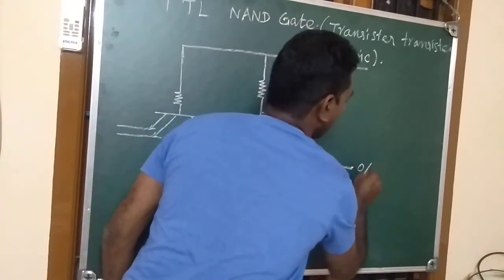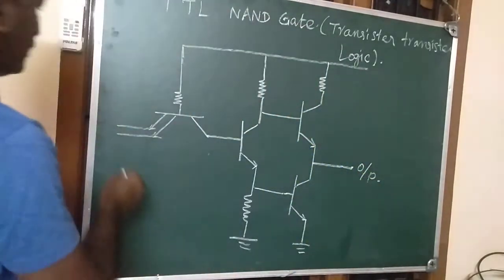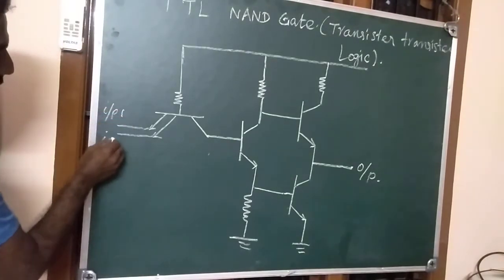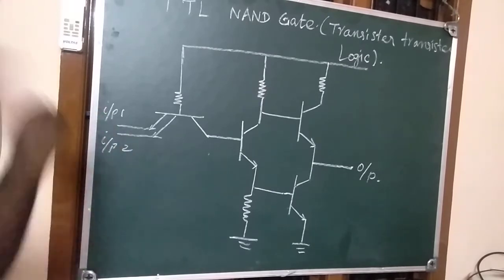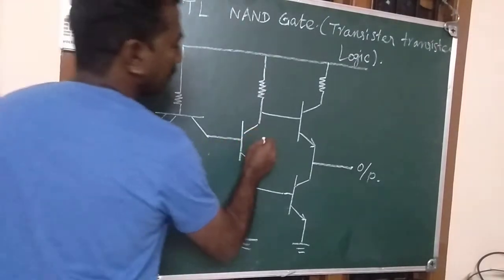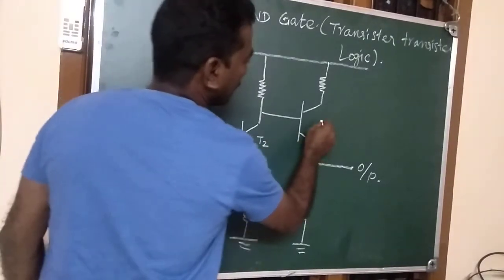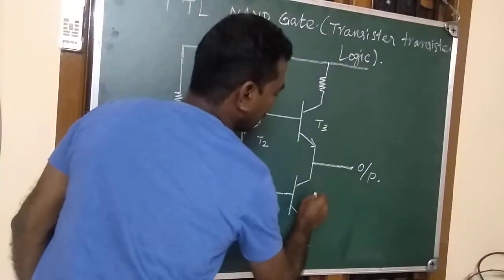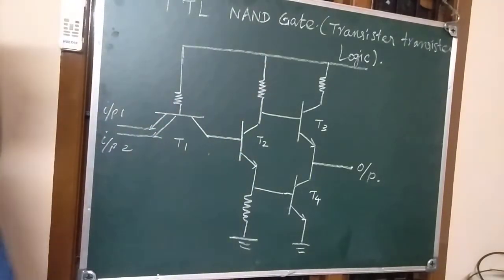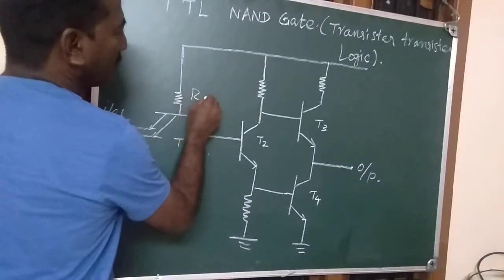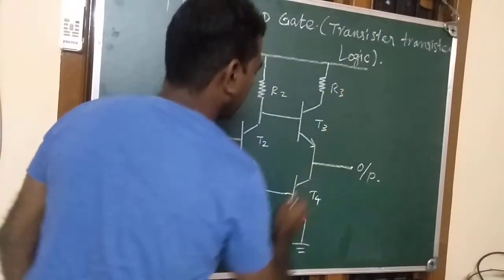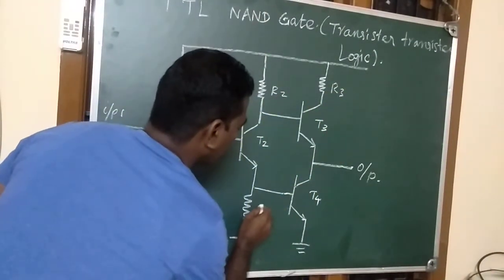This is the output terminal and these are the two input terminals: input terminal one and input terminal two. Let us assume this is transistor one, transistor two, transistor three, and transistor four. Let us name the resistors as R1, R2, R3, and R4.